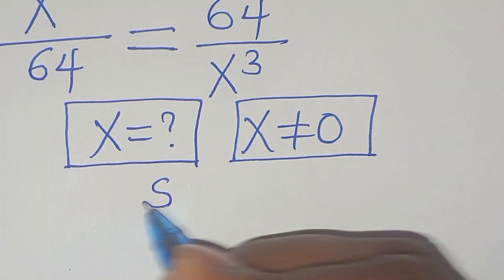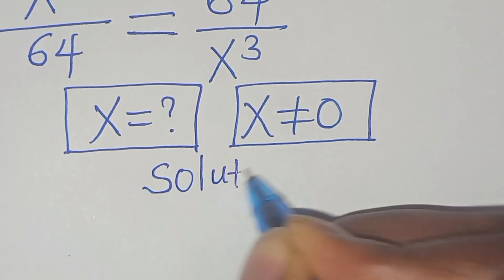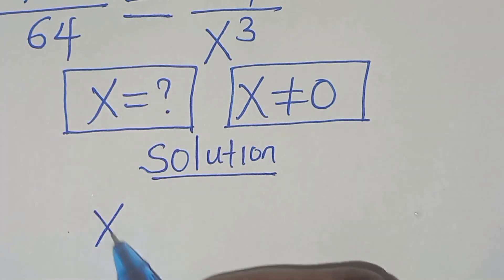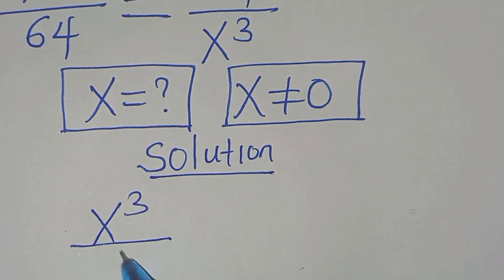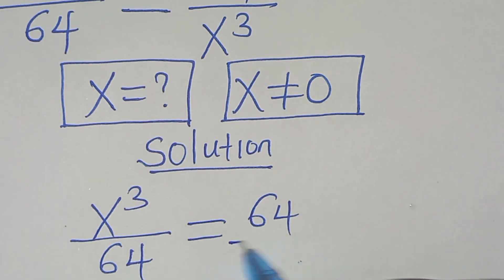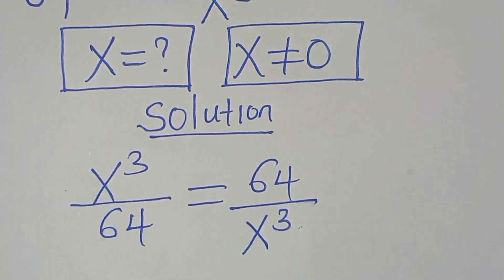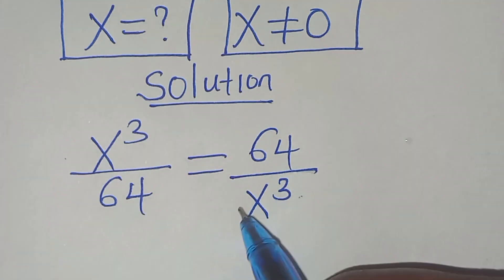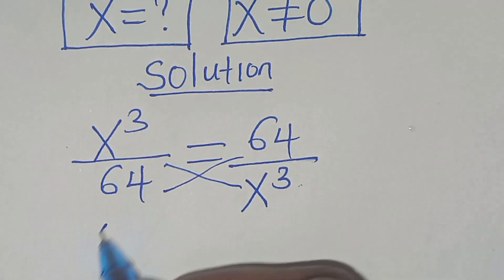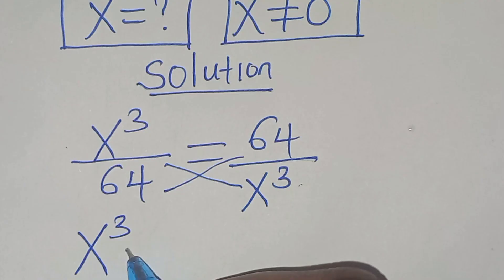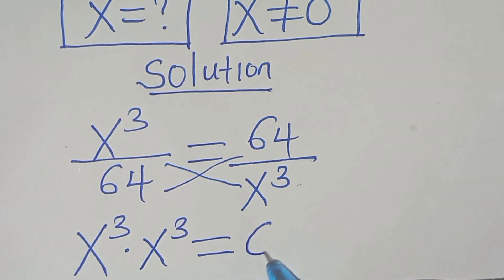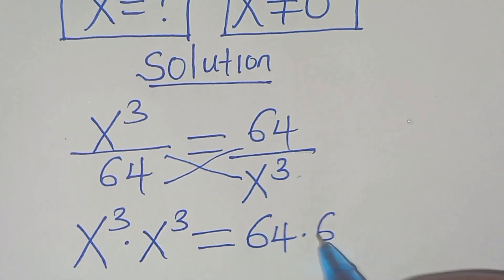So, let's present a solution. We have x to the power of 3, divided by 64, this is equal to 64 over x to the power of 3. The first step is to cross multiply, so that now we have x to the power of 3, times x to the power of 3, this is equal to 64 multiplied by 64.